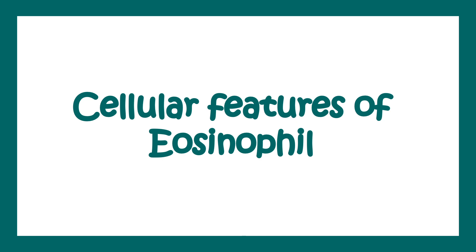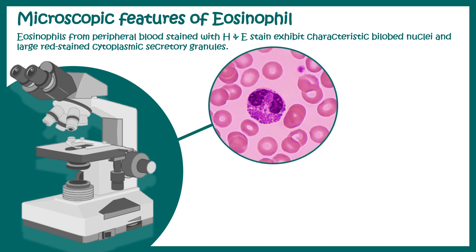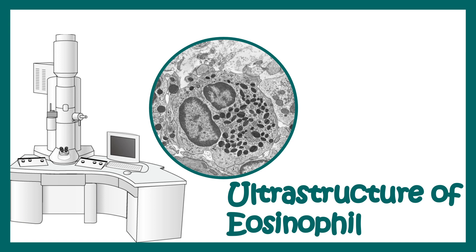Let's talk about some cellular features of Eosinophil, starting with the microscopic features. In hematoxylin and eosin stain we can see these Eosinophils stained with a pink stain. You can see the characteristic bilobed nucleus and a lot of cytoplasmic granules. If we look at the ultrastructure of the Eosinophil we can also appreciate the bilobed nucleus and the electron dense cytoplasmic granules.